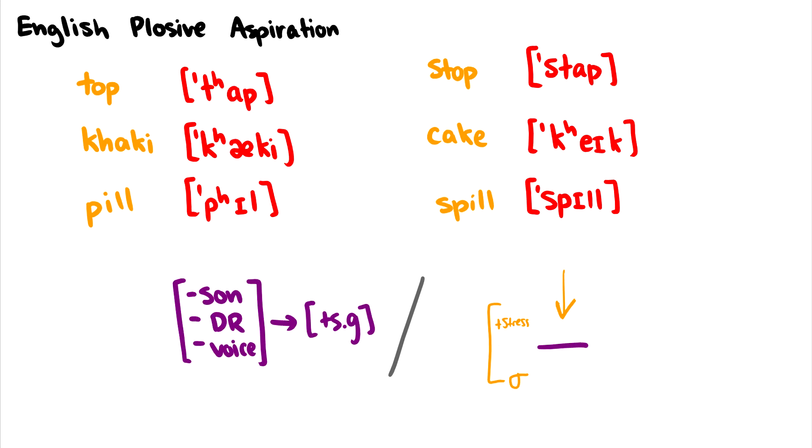That's one very common rule in English that has to do with the position of a sound in a syllable. The syllable notion is important to make sure that we don't have a case like stop. And then the stress is important to differentiate it from a word like khaki, where this K is at the beginning of a syllable, but it's not a stressed syllable.